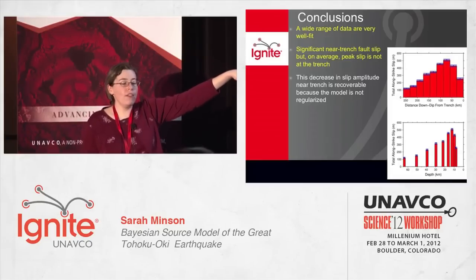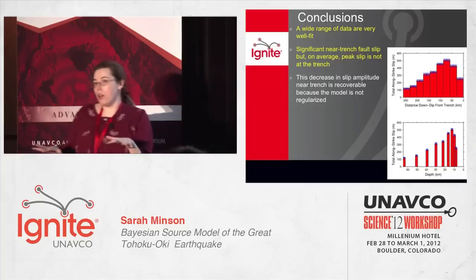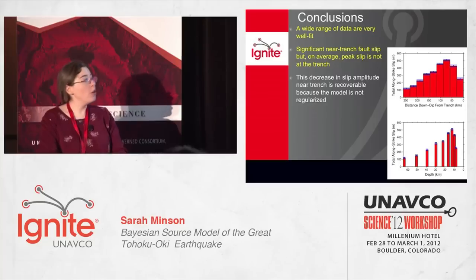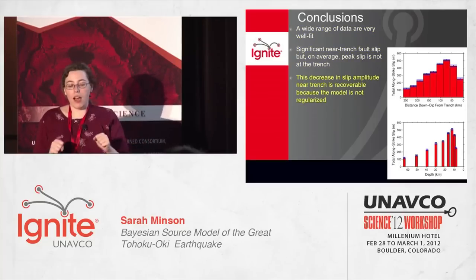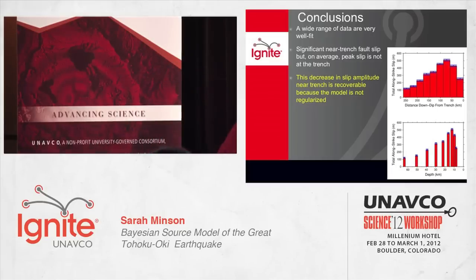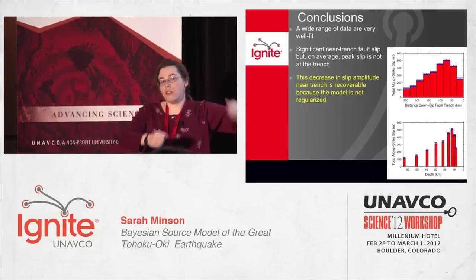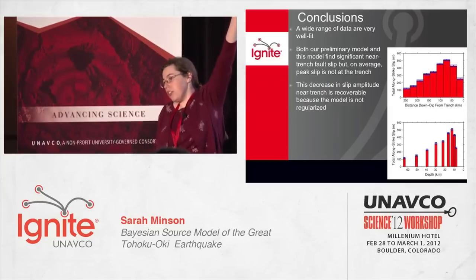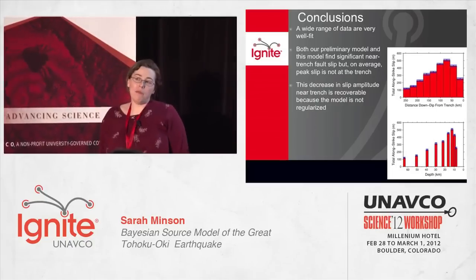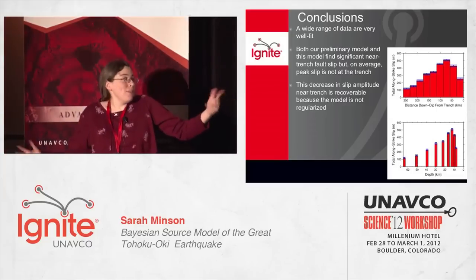Coming back to this issue of having slip go down near the trench: we can find this because we don't constrain our model — we just go out and find slip models which satisfy the data. Most traditional models use smoothing. When your slip is very well constrained near the coast and it's increasing as you go toward the trench, and you don't know what's happening at the trench, if you smooth, you just extrapolate to larger and larger slips near the trench whether you need it or not. And you don't need it — we can fit the data without putting a lot of slip near the trench. We don't rule it out, because you can also fit the data with slip near the trench.